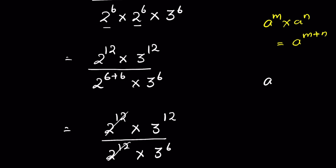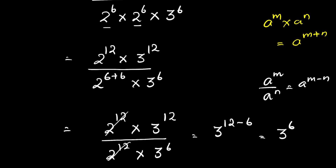Also, if a to the power m upon a to the power n, it is equal to a to the power m minus n. So it will be 3 to the power 12 minus 6, which is equal to 3 to the power 6, and that is equal to 729.